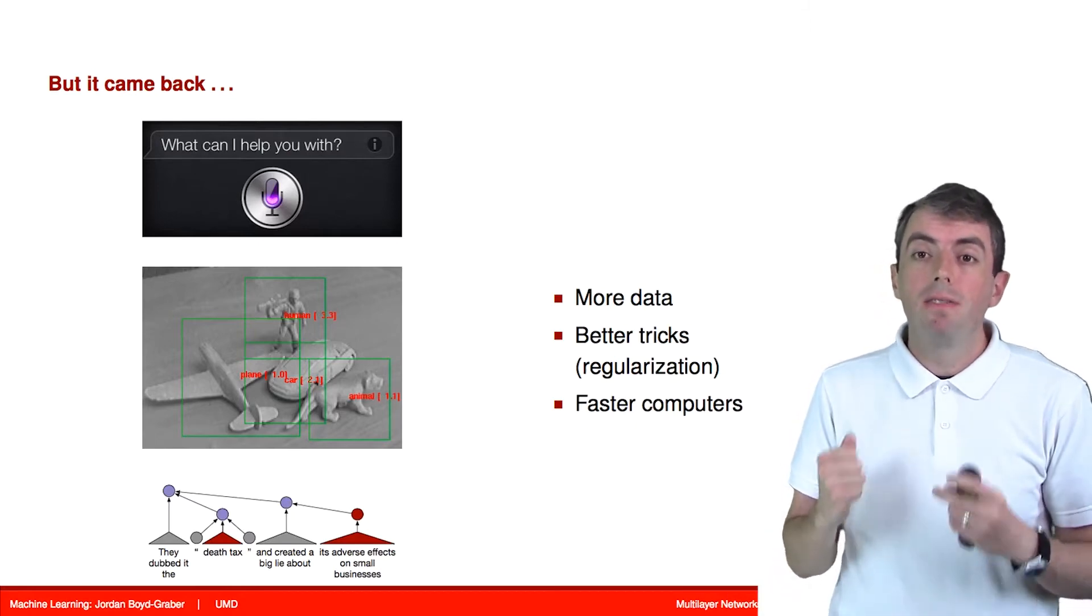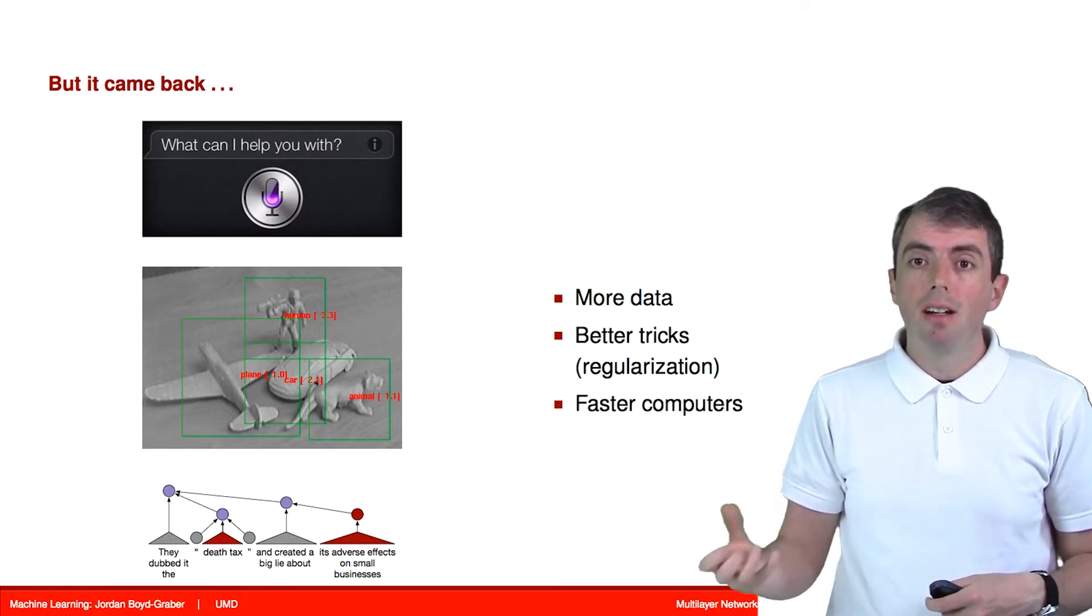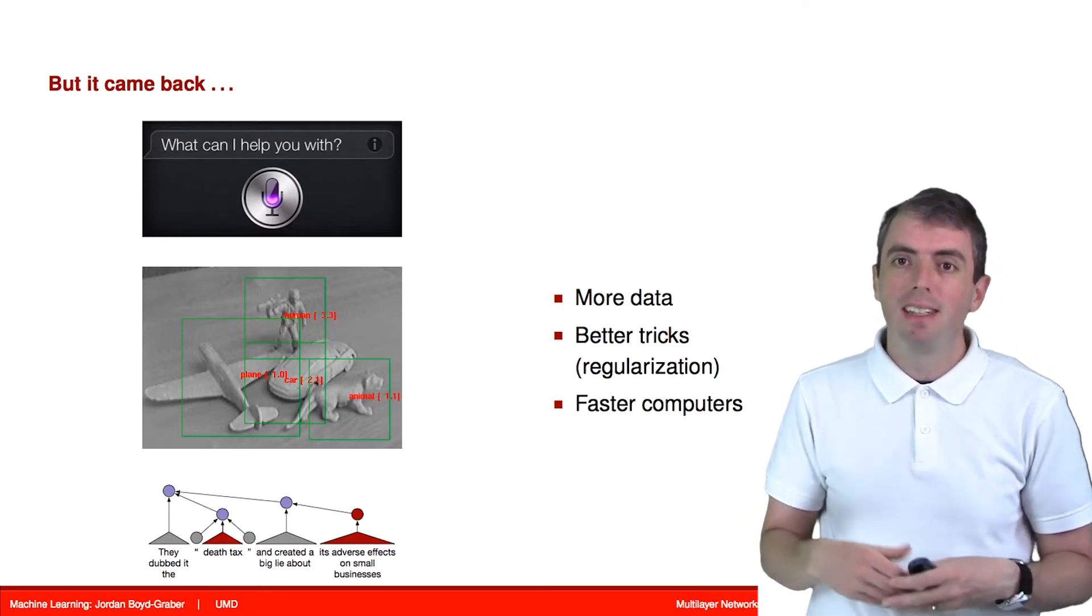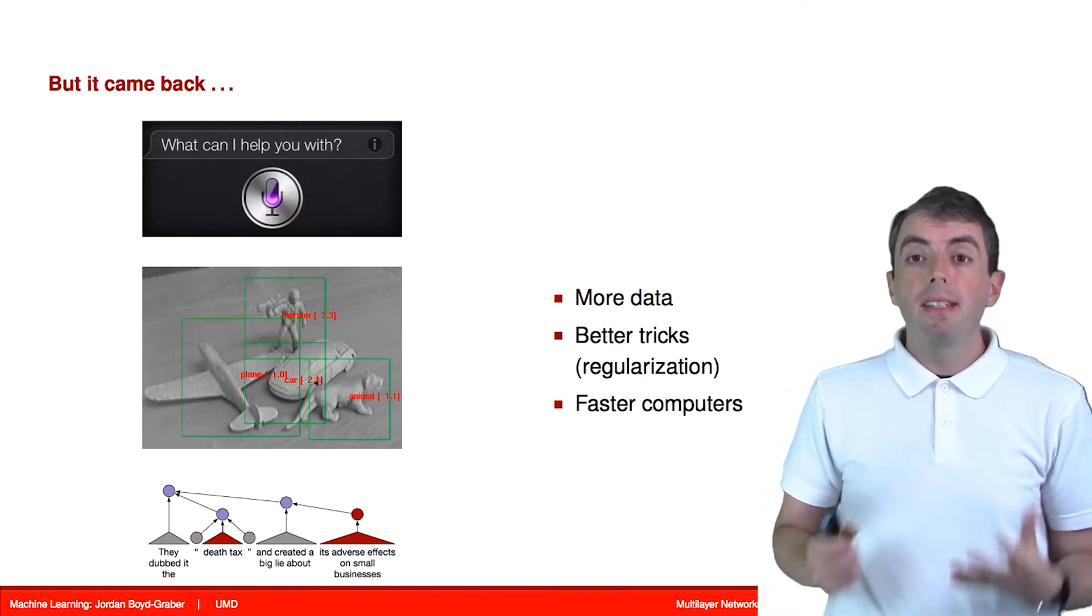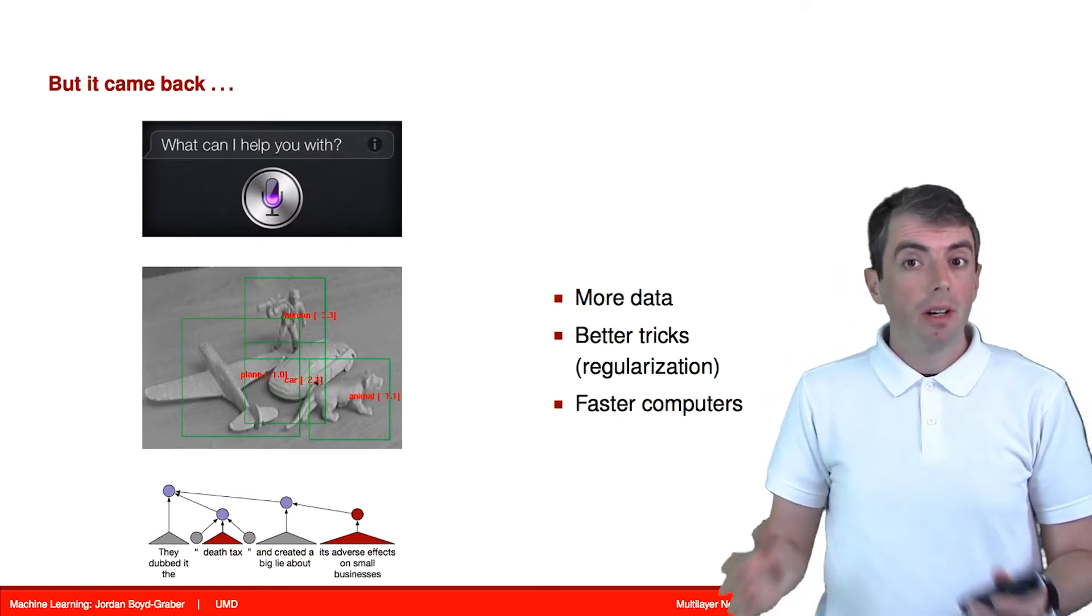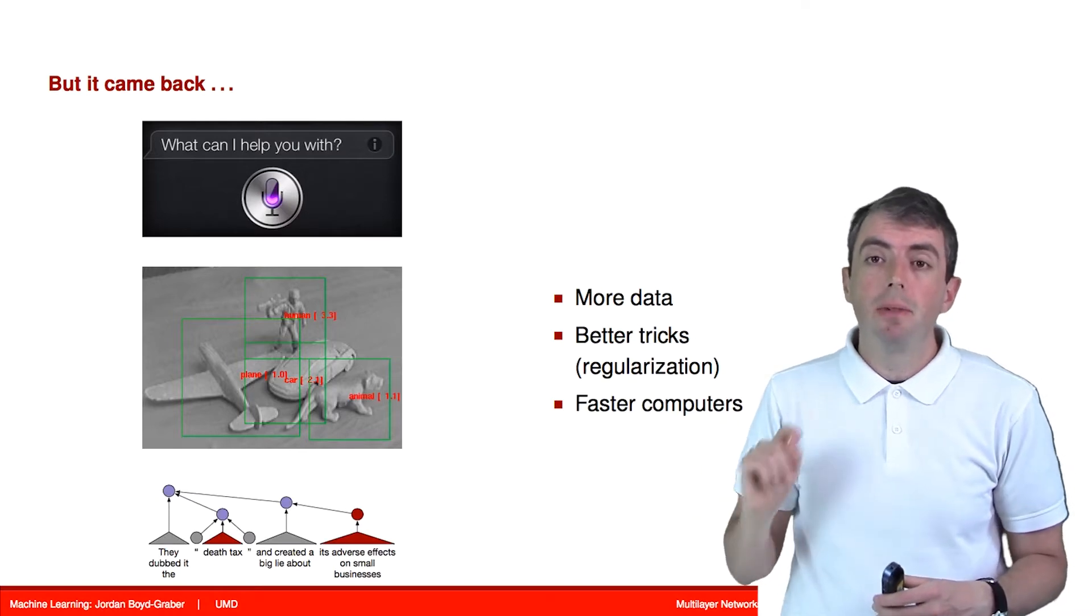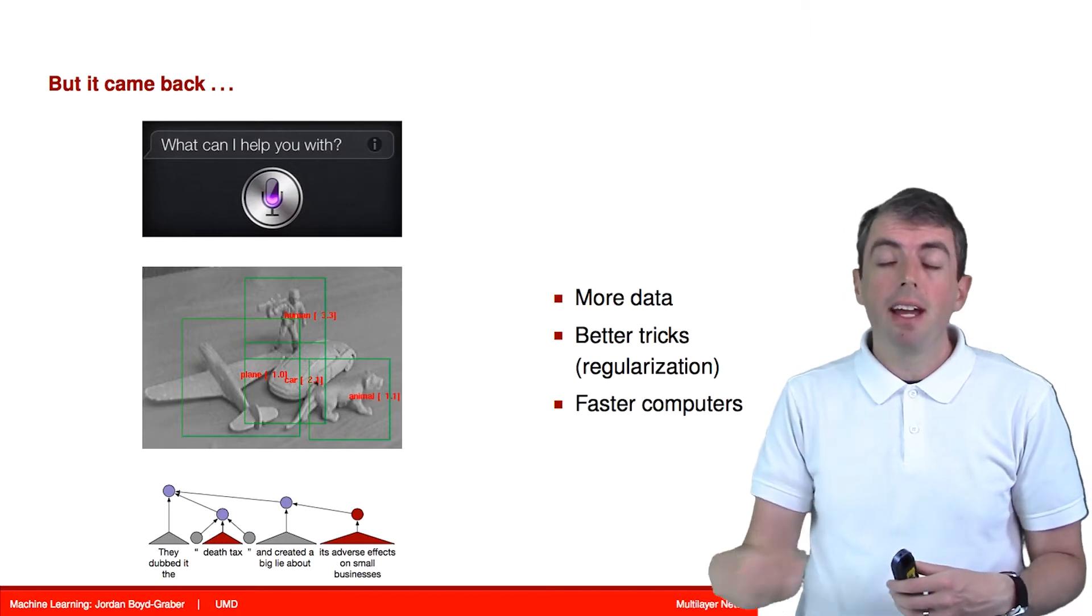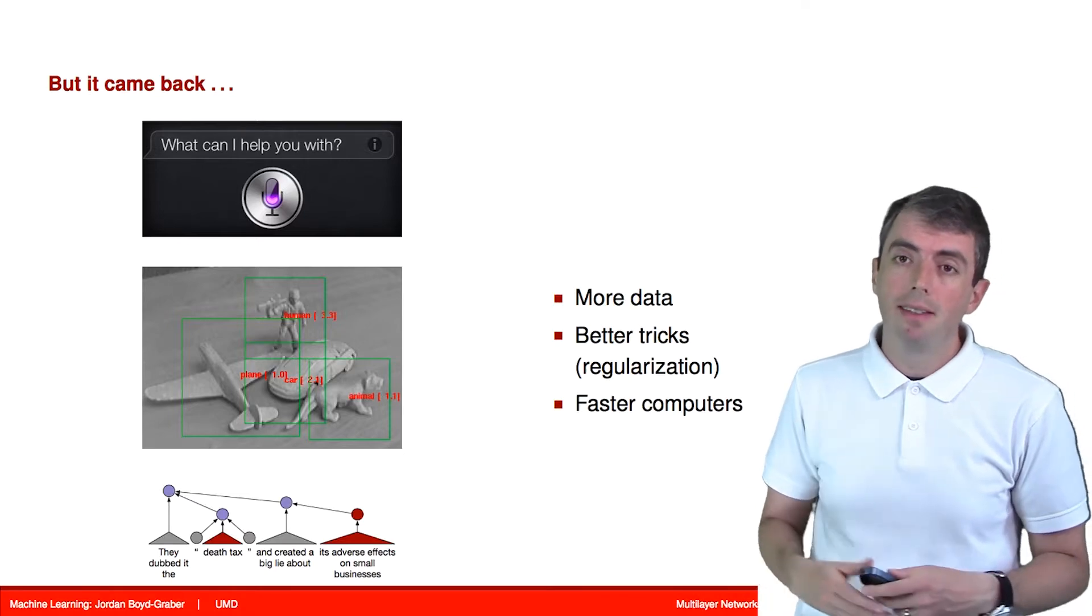And they have come back with a vengeance. They are very popular and in many fields are the state of the art at many important tasks like speech recognition, object detection, and increasingly in language as well. But the techniques haven't changed all that much. They're still basically the same underlying algorithms. The bigger difference is that we now have more computing power and a lot more data. And these things together have made neural networks much more powerful than they were in the past on slower machines with less data.